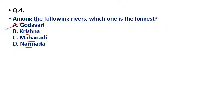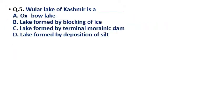Question 5: Wular Lake of Kashmir is — (a) an oxbow lake, (b) a lake formed by blocking of ice, (c) a lake formed by terminal morainic dam, (d) a lake formed by deposition of silt. The correct answer is option C — a lake formed by a terminal morainic dam.